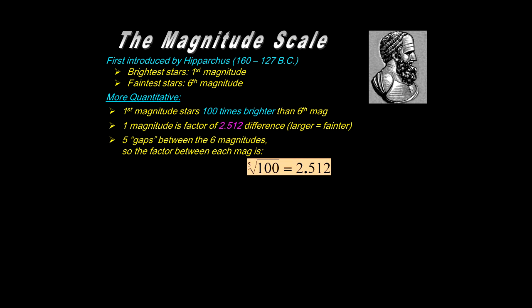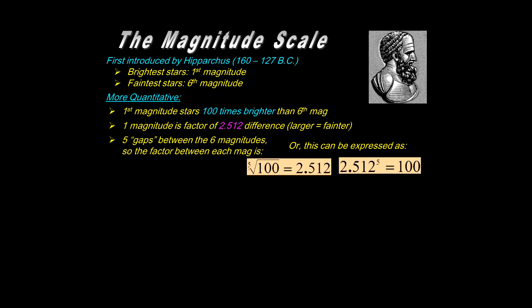If first and sixth have a factor of 100 difference, then one magnitude is a factor of 2.512. Larger numbers correspond to fainter stars, so sixth magnitude is the faintest with the unaided eye. There are six magnitudes, first to sixth, meaning five gaps — and each gap corresponds to a factor of 2.512, which is really the fifth root of 100. So 2.512 to the fifth power equals 100 — that's the span of intensity difference between magnitudes one to six.